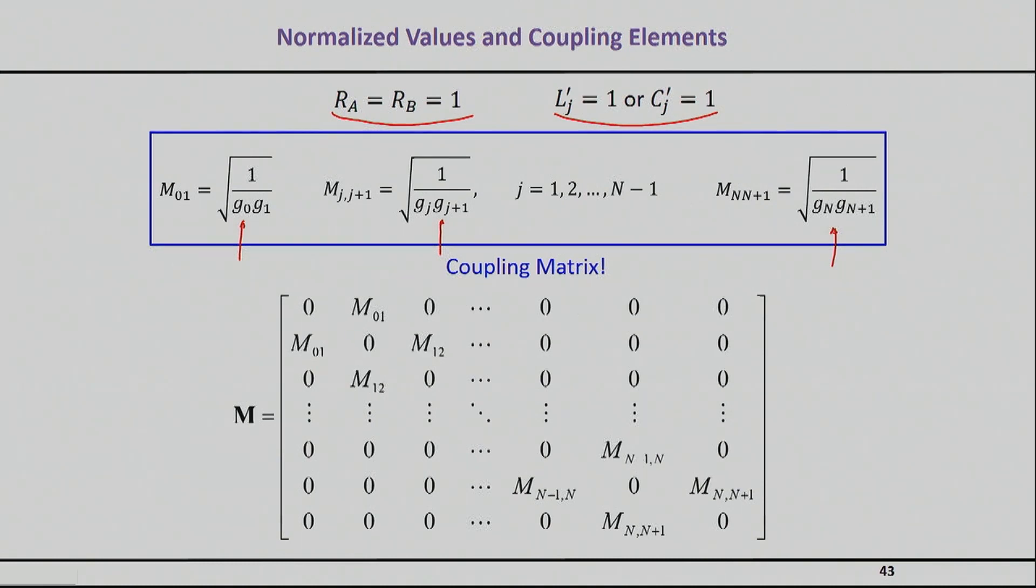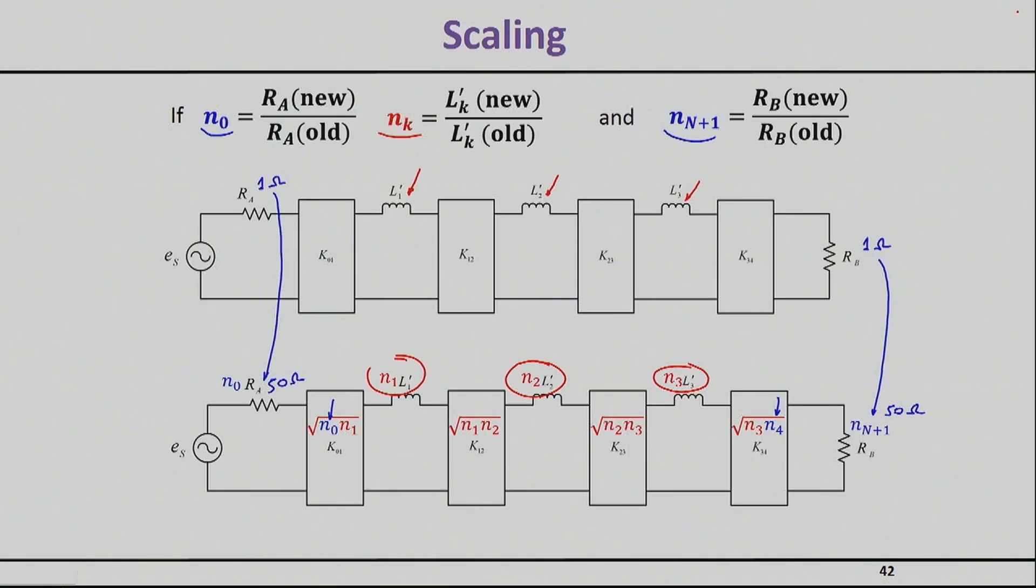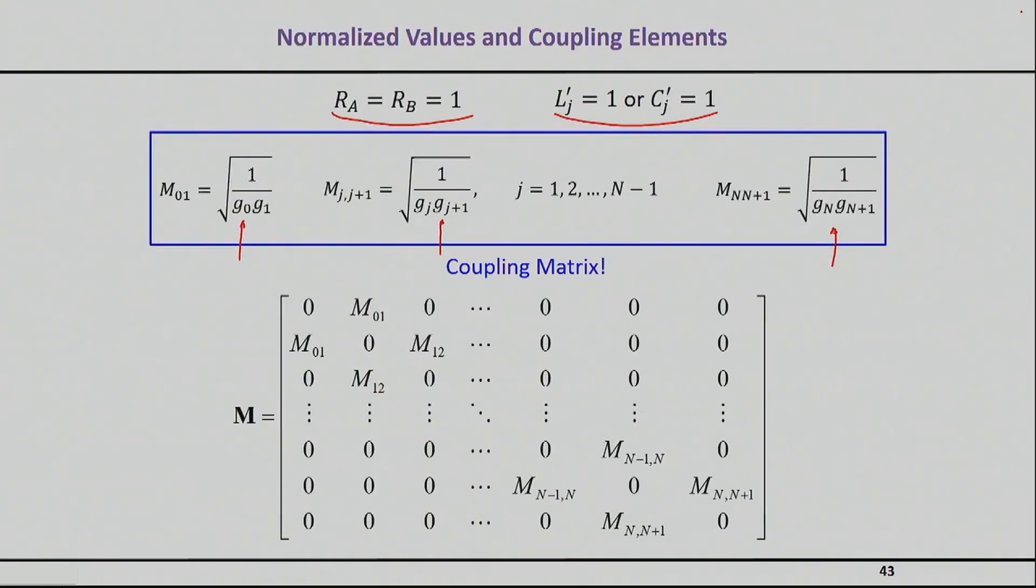If you look at the equations we discussed for J, if you choose your C to be one, then your J in the coupling between one and two will simply be one by square root G1 and G2. The same thing applies for K, and for this type of normalization we use this common name M to indicate the values of the coupling sections.